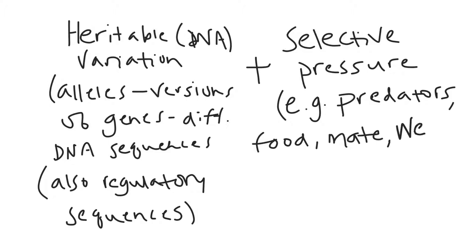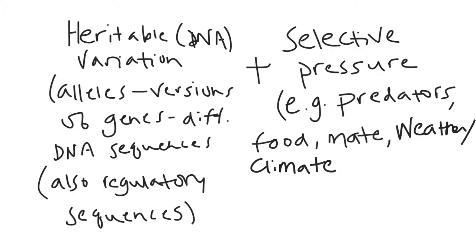You can think of other examples of selective pressures as well — something like the weather for a season, or climate overall. A longer-term shift in environmental conditions can be a selective pressure: which individuals can survive better in that single season or across multiple seasons.